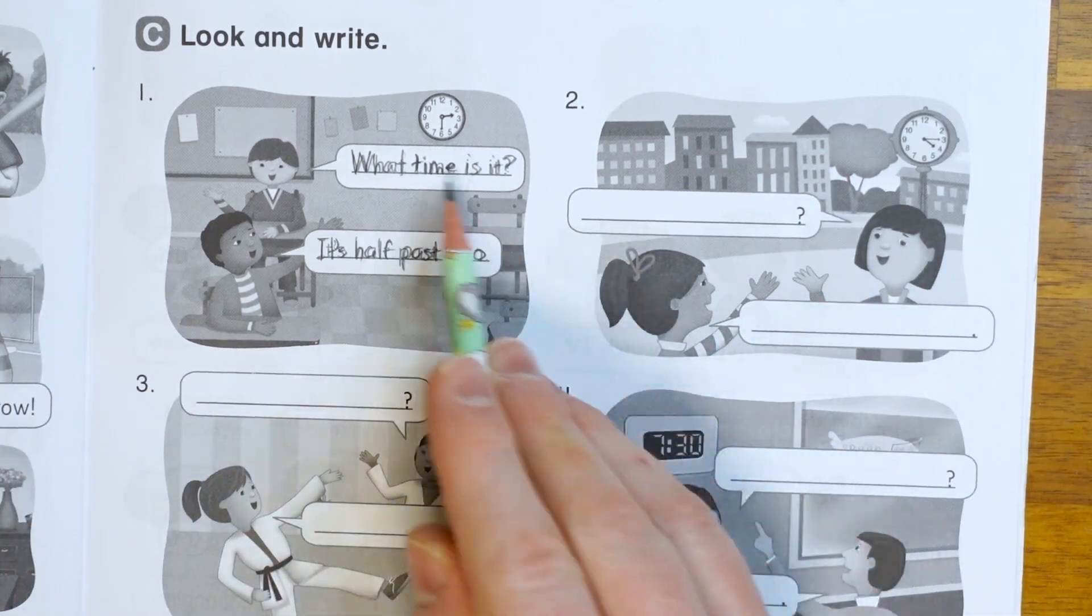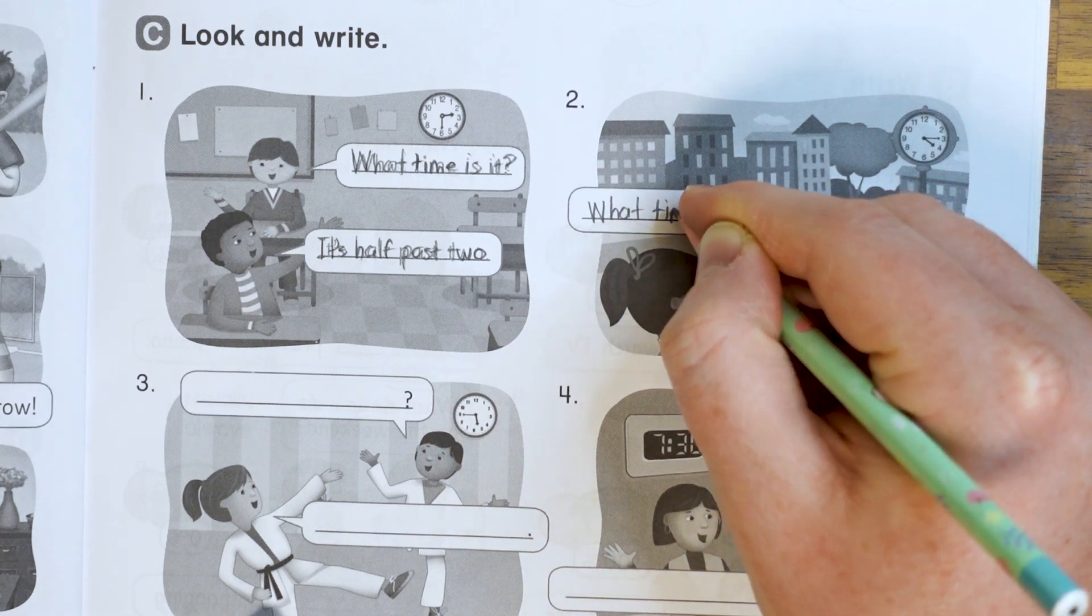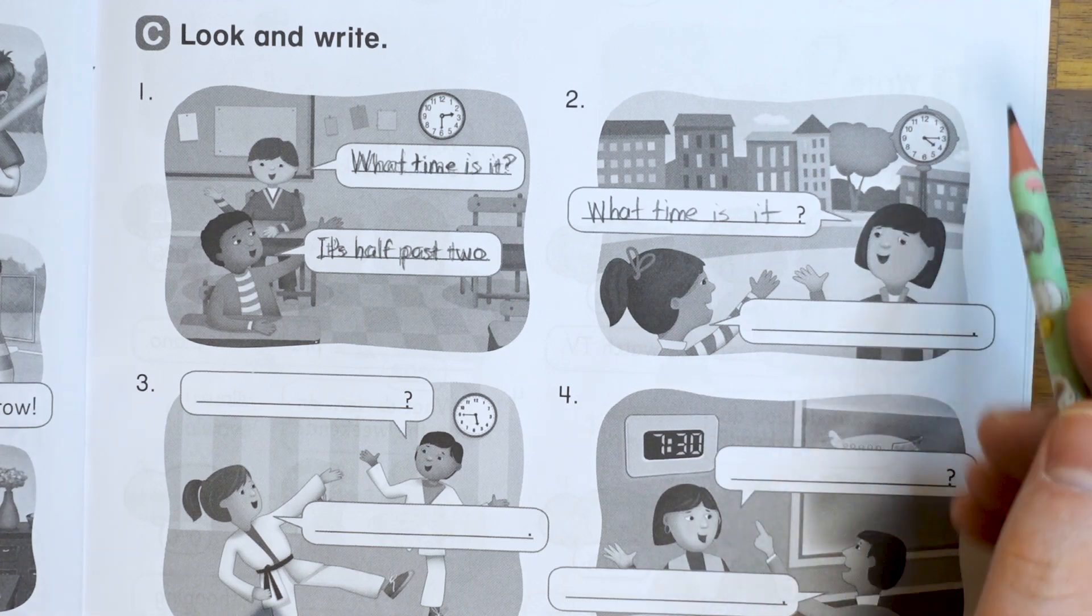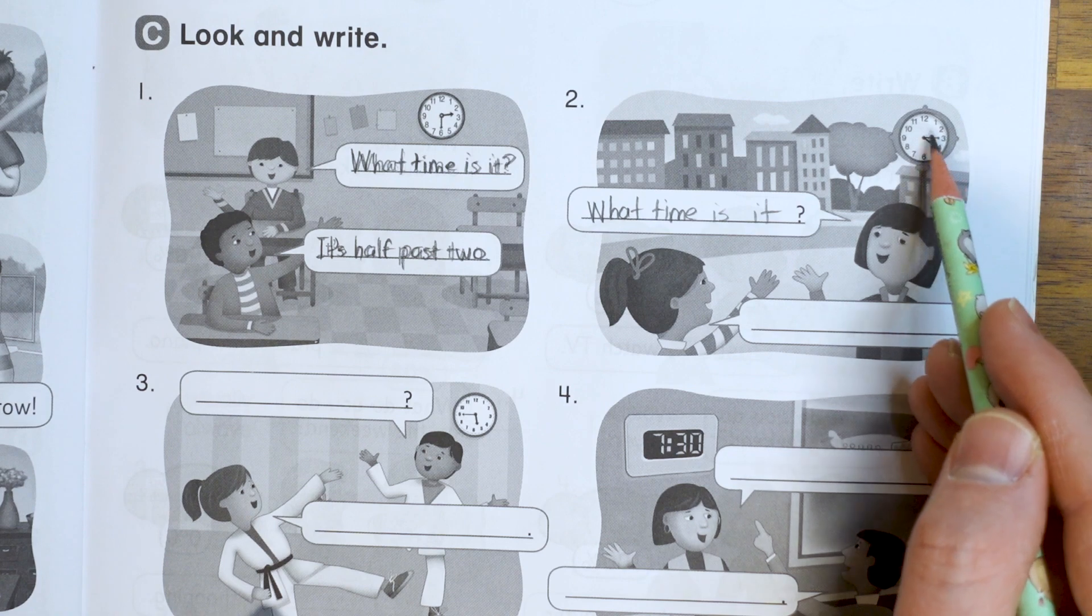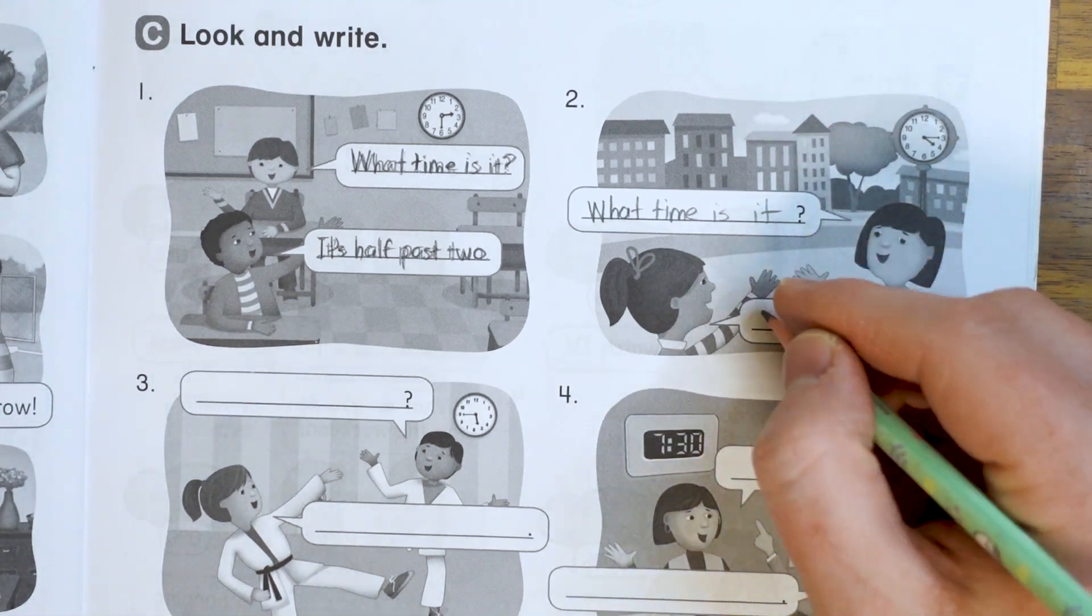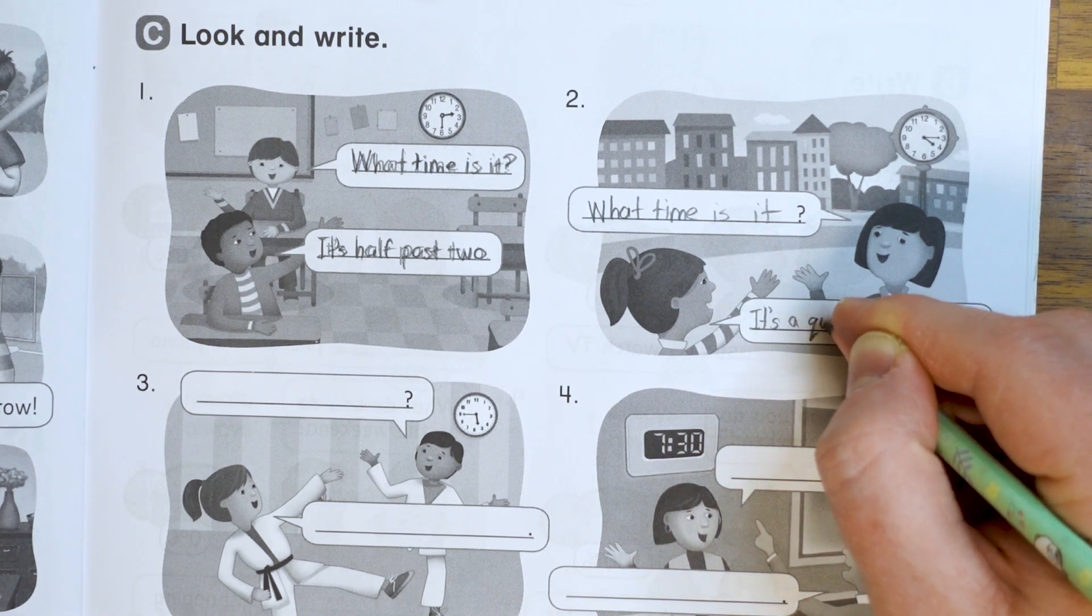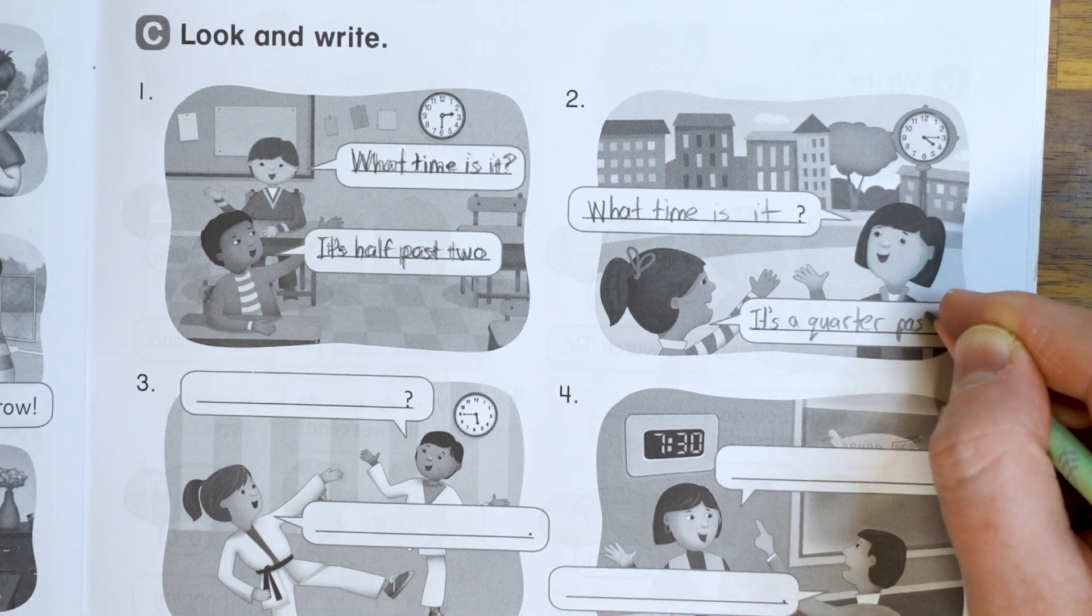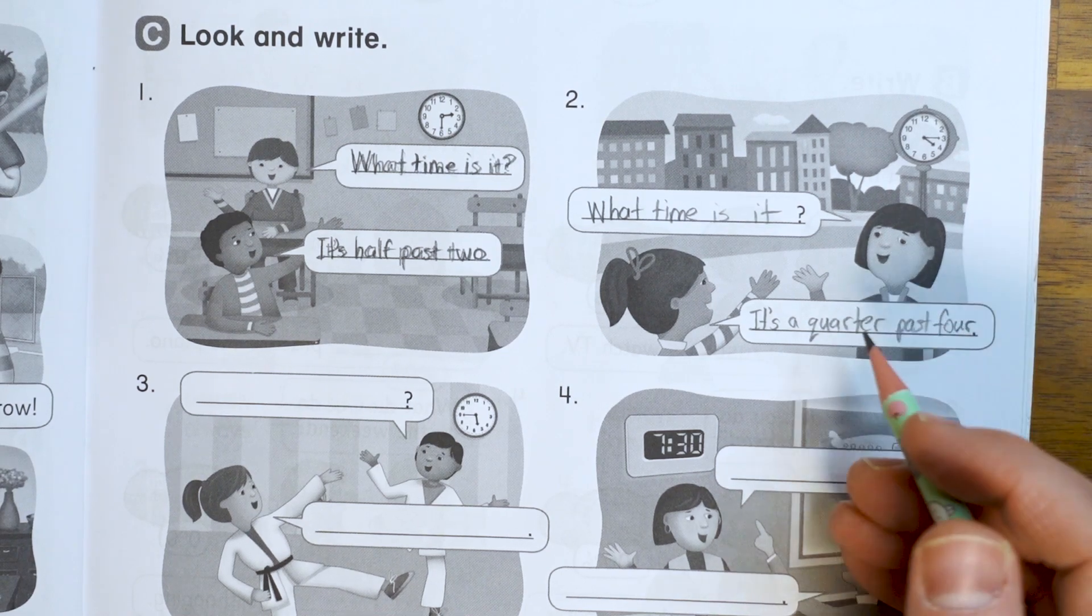Okay. Number two question is the same. So we're going to ask again, what time is it? What time is it? And on this clock, it's four and three means 15. So 4:15, or we can write, it's a quarter past four. So what I'm going to write. It's a quarter, q-u-a-r-t-e-r past four. F-o-u-r. Okay.